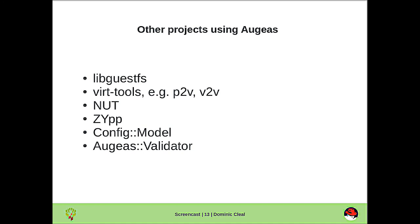Augeas is a library, so it's used in a number of other projects. LibGuestFS allows you to view and modify virtual machine images, and exposes the Augeas API to you so you can make controlled edits to a configuration file within a VM through LibGuestFS. Virt Tools also uses Augeas to read and modify fstab entries when doing physical to virtual migrations.